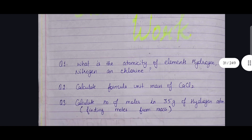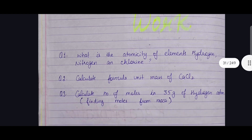Homework for the molecules lesson: what is the atomicity of elements hydrogen, nitrogen, and chlorine; calculate the formula unit mass of CaCl₂; and calculate the number of moles in 35 grams of hydrogen atom.